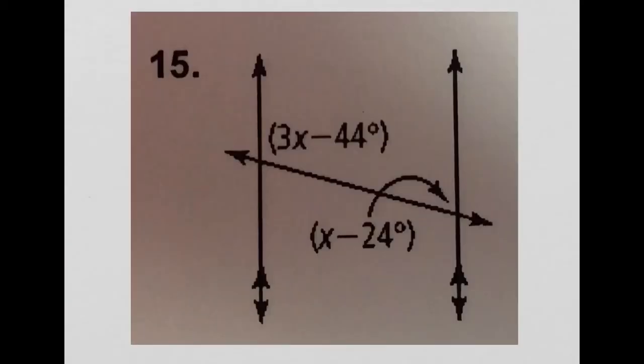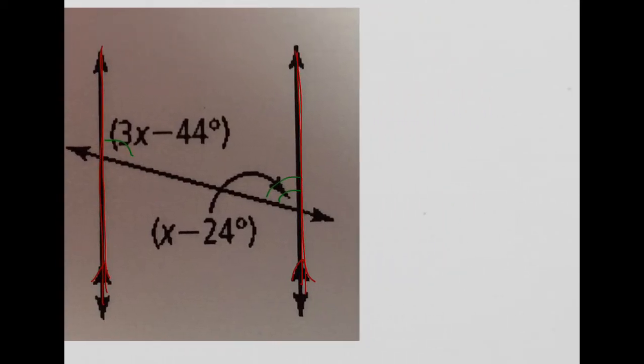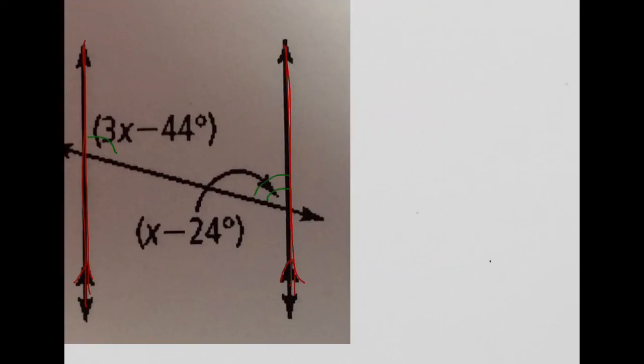Alright, let's take a look at number 15. So these two lines here are parallel, and the way that I know that is that they have the same number of arrows. So I'm going to take a look, and these two angles here, these are same side interior angles, and so I know that by the same side interior angles theorem, if these lines are parallel, then my same side interior angles are going to be supplementary. So I can write the equation 3x minus 44 plus x minus 24 equals 180, because supplementary angles add together to be 180 degrees.